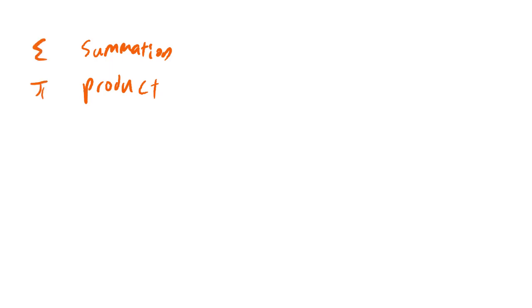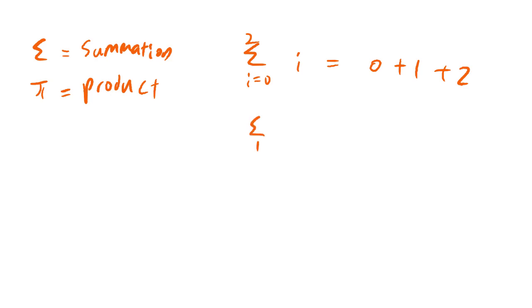Hi everyone, today I'm going to introduce summation notation and product notation. These two symbols serve different purposes. For example, if we have a summation of i from 0 to 2 of i, the answer will be 0 plus 1 plus 2. If we have a summation from 1 to 2 of i, the answer will be 1 plus 2, which equals 3.